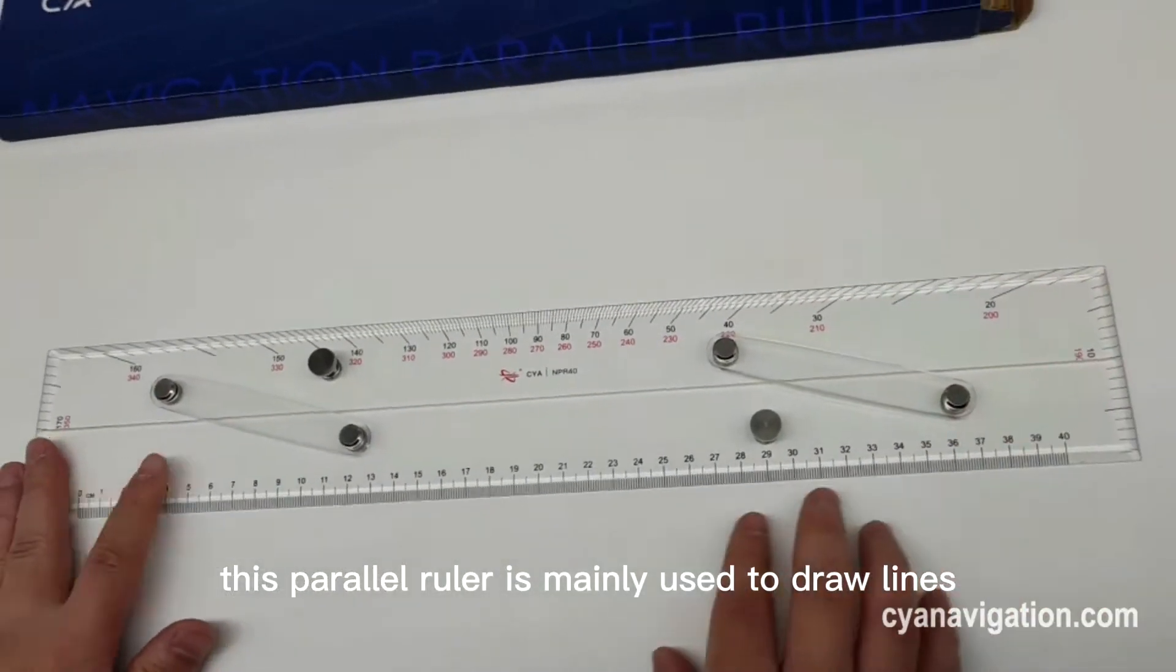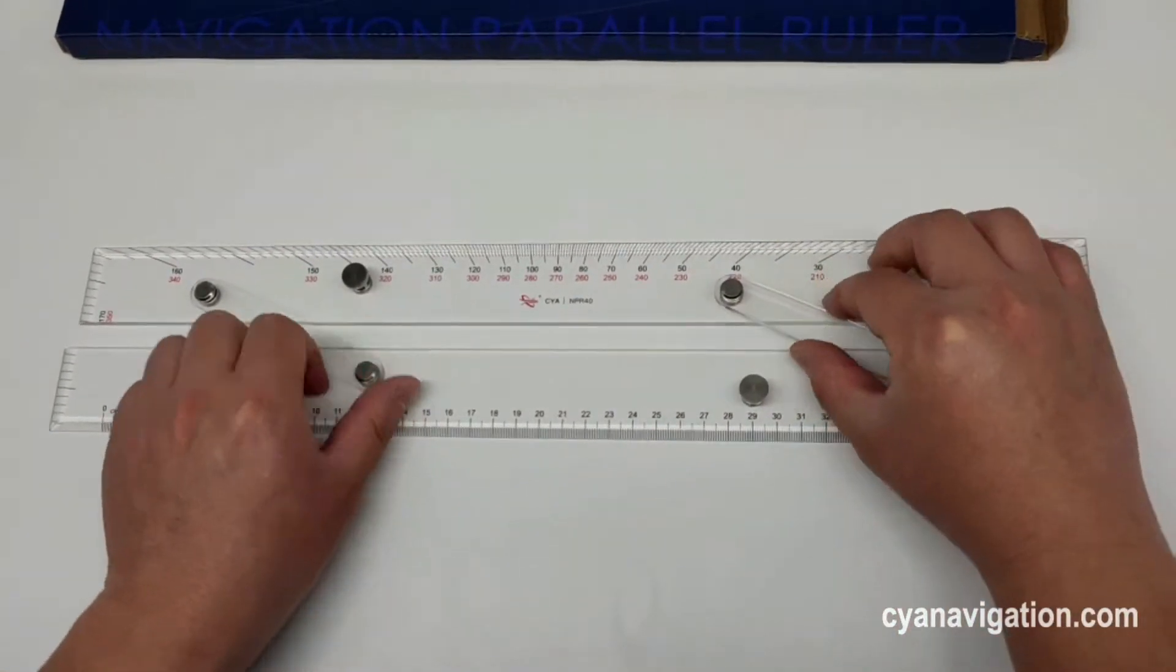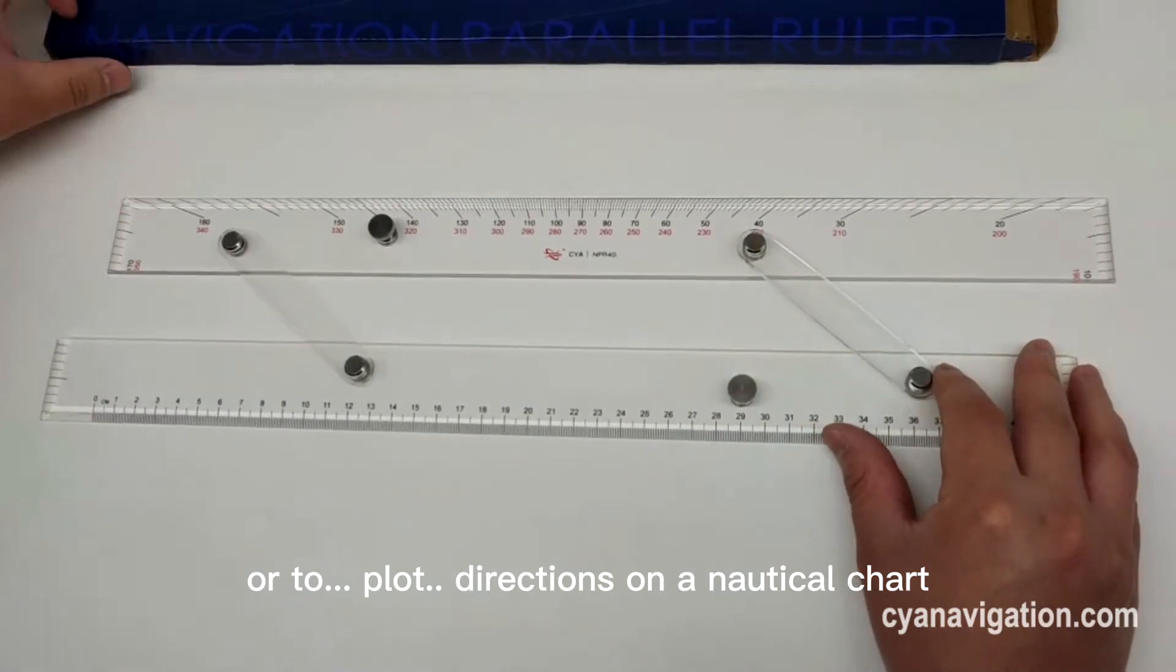This parallel ruler is mainly used to draw lines or to plot directions on a nautical chart.